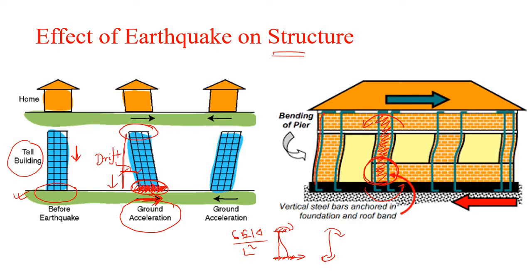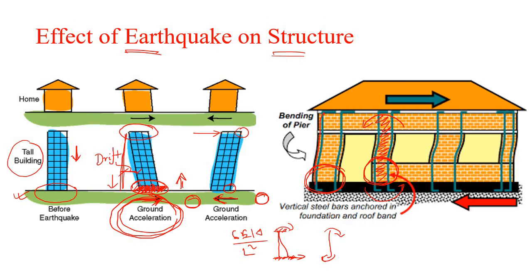We are interested about earthquake load because it causes drift within the structure due to ground acceleration, and due to this differential movement from top to bottom there is extra stress within the members. So due to this ground acceleration, nothing but a lateral load is being generated. The ground is moving from one side to the other, and above the ground we can say that a lateral load is being applied.